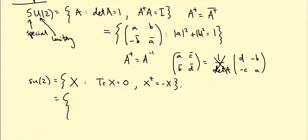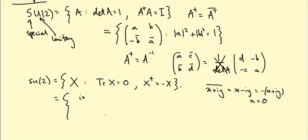For a general element of su(2): trace zero means the two diagonal entries have opposite sign. The anti-Hermitian condition X† = −X means diagonal entries must be purely imaginary — if you have x + iy and conjugate it to x − iy, for that to equal −(x + iy), we need x = 0. So diagonal entries are iX and −iX.